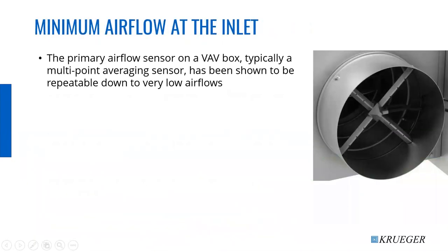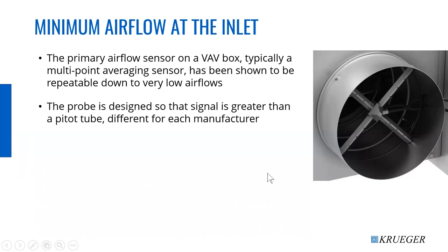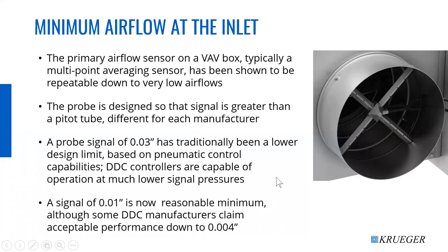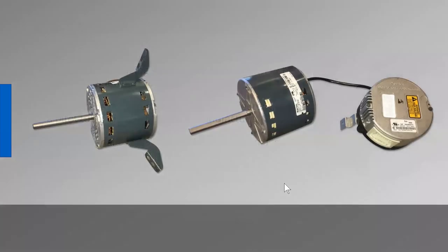If the fan airflow is varied rather than operating at constant flow, the energy savings with a series fan box with an electrically commutated motor can be quite significant. Regarding primary air sensors on VAV boxes: studies show all probes are linear down to very low airflows, but the pressure transducer in the digital controller may not be able to resolve it. The probe has a magnification built in. Historically, 0.03 was the low end of a pneumatic controller's ability to control. Today's digital controllers can go much lower — 0.01 is now recommended as a reasonable minimum, but we've seen 0.004 as a pressure signal, about 180 feet per minute with our probe.